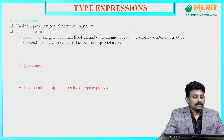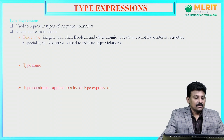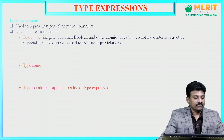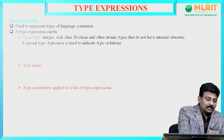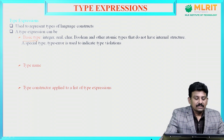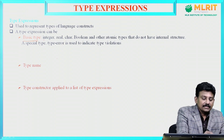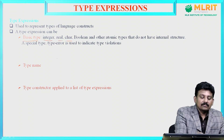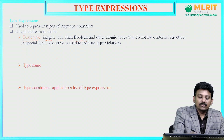Type expression is used to represent types of language constructs. A type expression can be a basic type, a type name, or a type constructor applied to a list of type expressions. First, we will discuss basic type. Basic types include integer, real, character, boolean, and other atomic types.